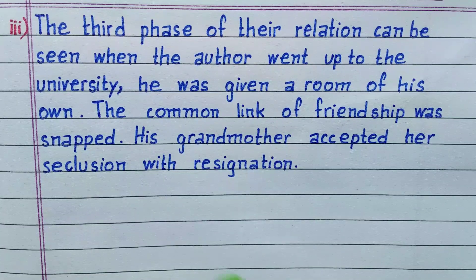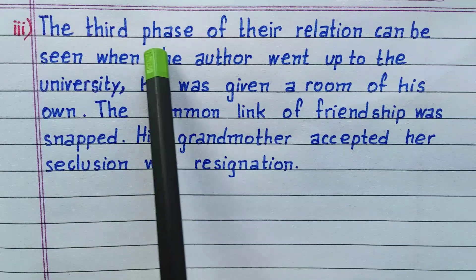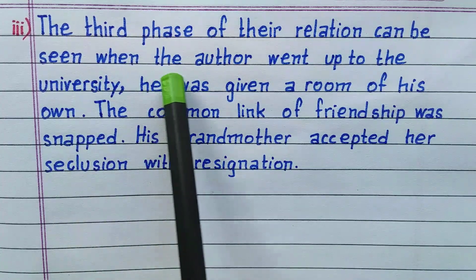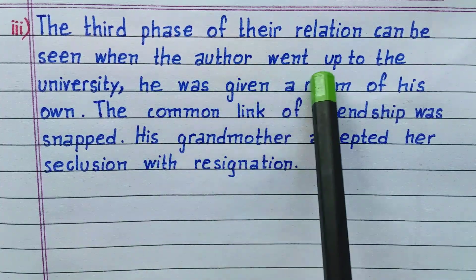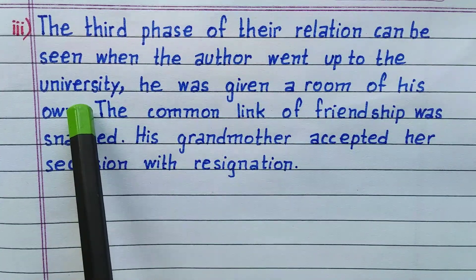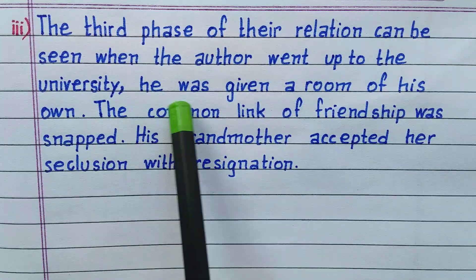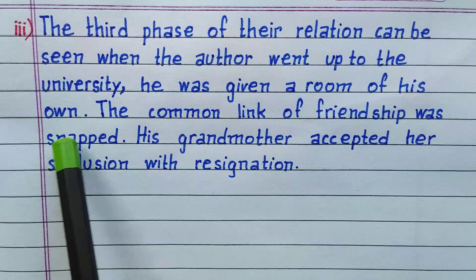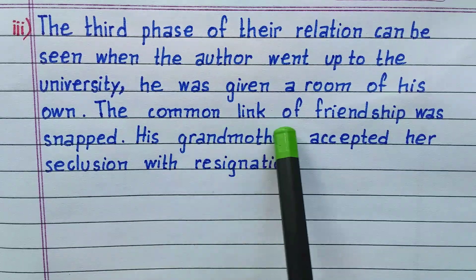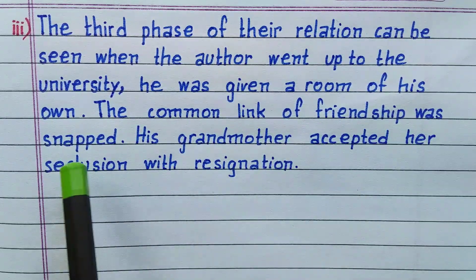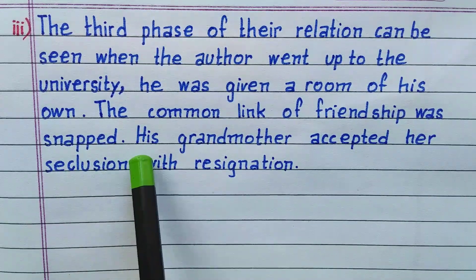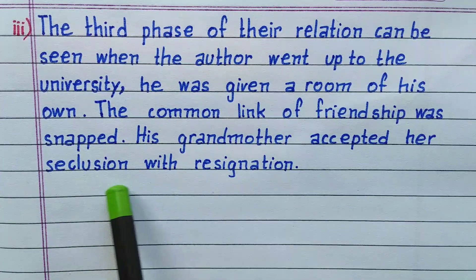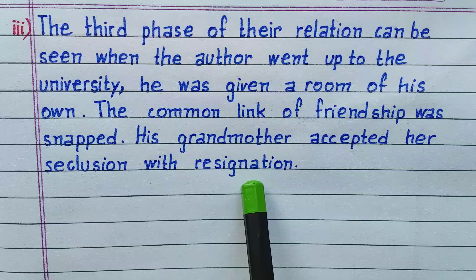Number 3: The third phase of the relationship can be seen when the author went up to the university. He was given a room of his own, and the common link of friendship was snapped. His grandmother accepted her seclusion with resignation.